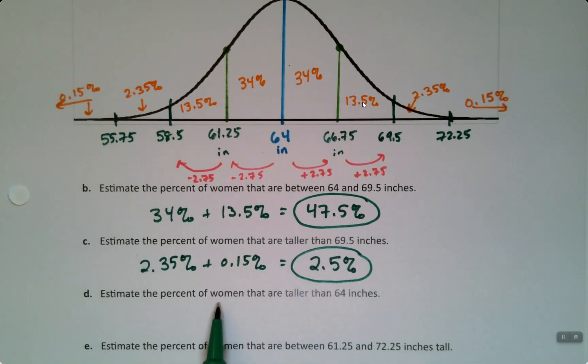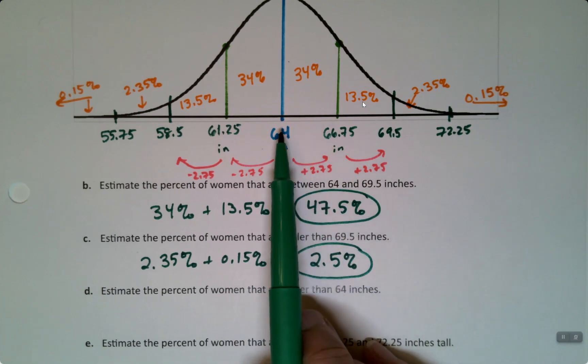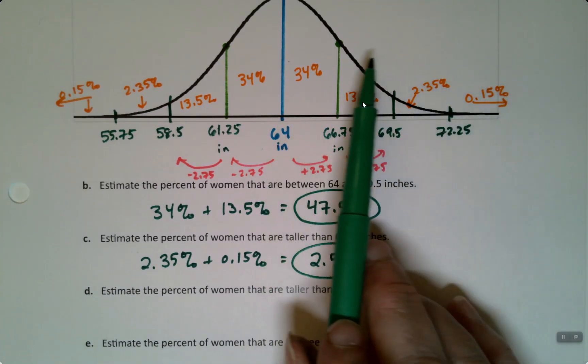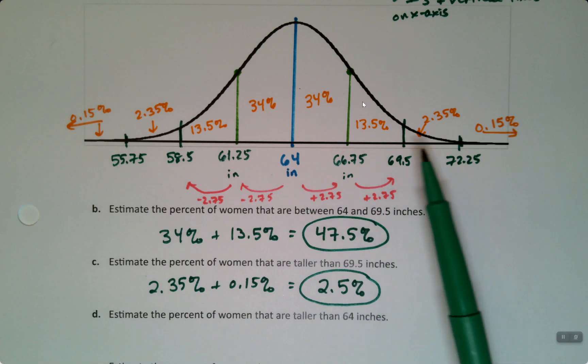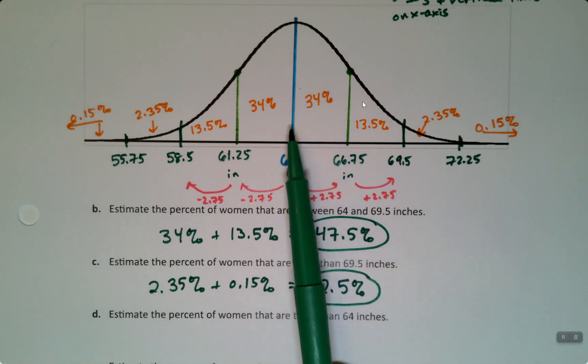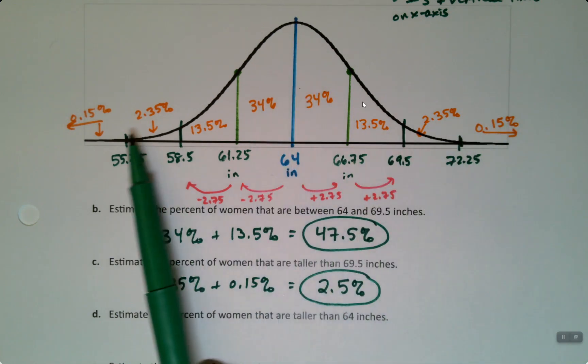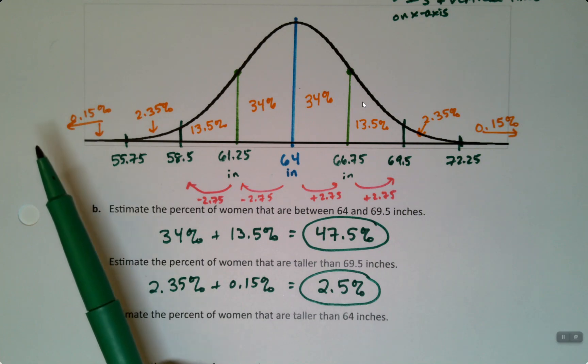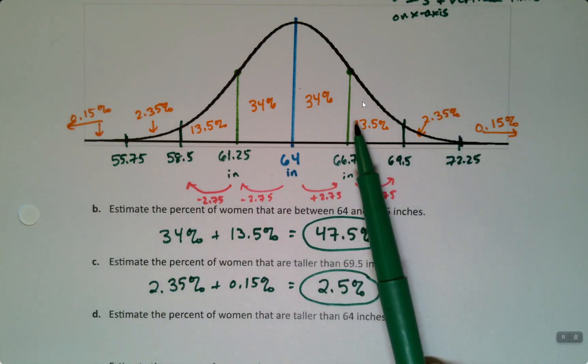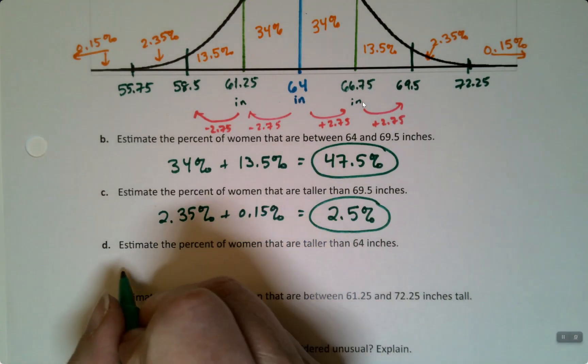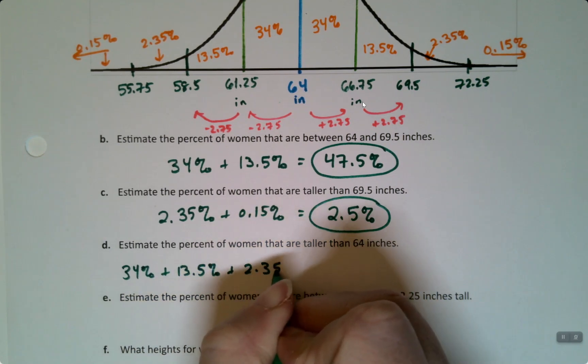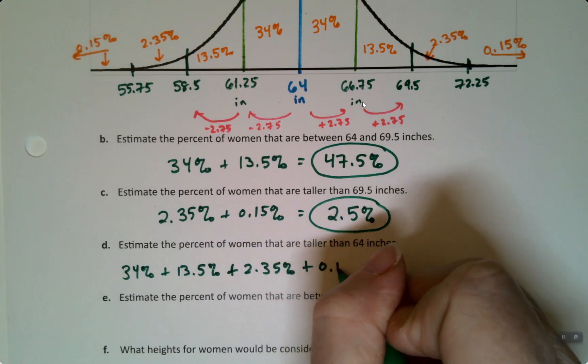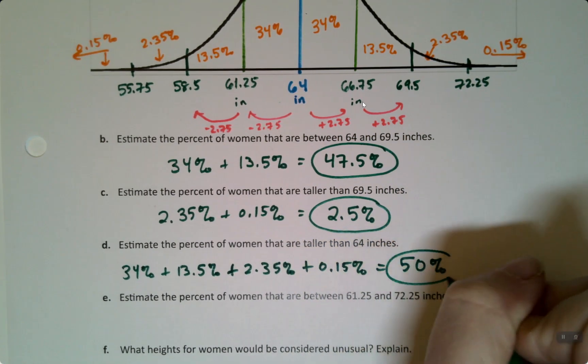This one's really easy. The percentage of women that are taller than 64. Well, 64 is right here. So taller than that would be these four. But remember, you could go add those four if you wanted to. But remember, the whole curve makes one. It has to make 100%, right? And if this is the middle line, then half the women are above that height and half the women are below that height. In other words, it's 50%. 50% are over here. You could add these four numbers up, it adds to 50%. But you don't actually have to show this work if you don't want to, because you know that it must make 50%. It's half the curve.